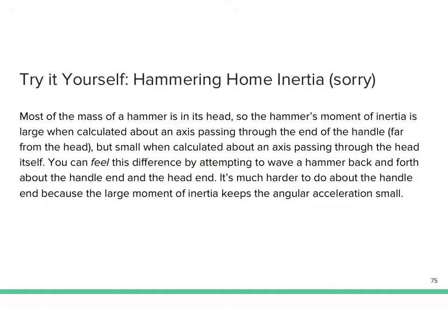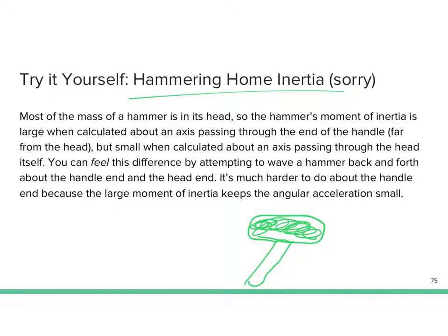Here's a practical example with a big hammer. Most of the mass is in the head. If you hold it at the very bottom, it's hard to swing back and forth because it has a very large moment of inertia. If you hold it right by the head, it's much easier — small moment of inertia means less torque is needed for the same angular acceleration. It's all based on how the mass is distributed relative to the axis of rotation.